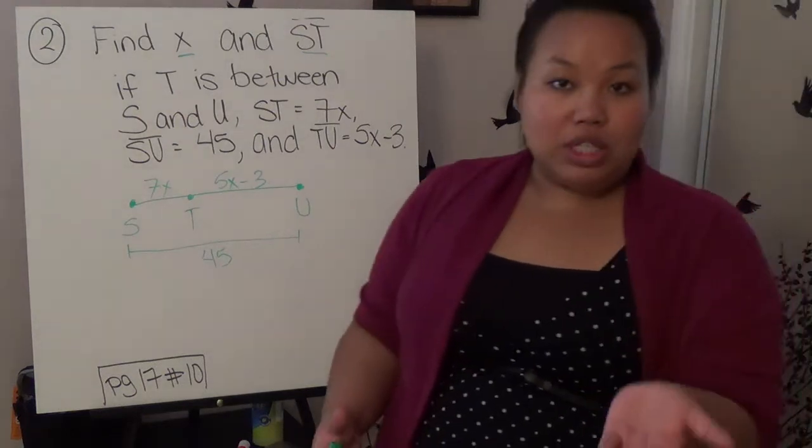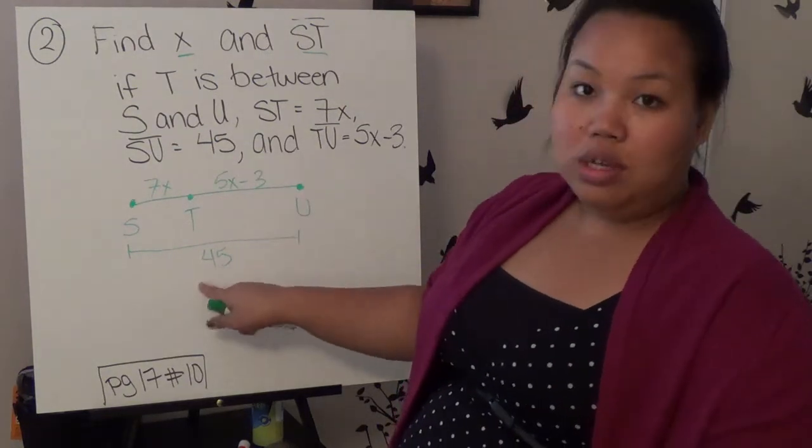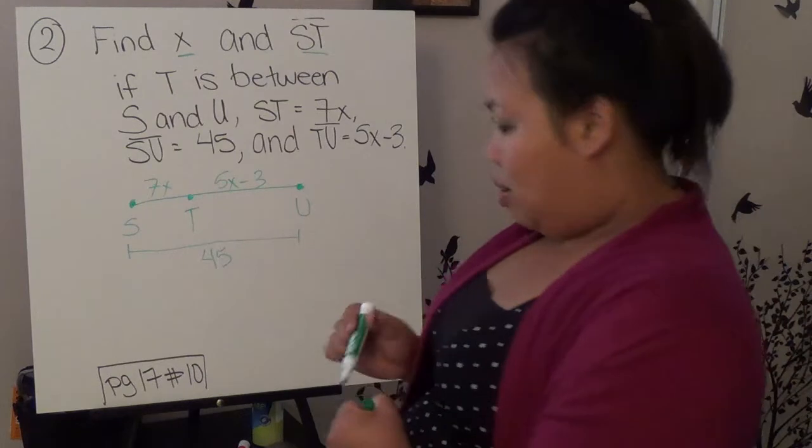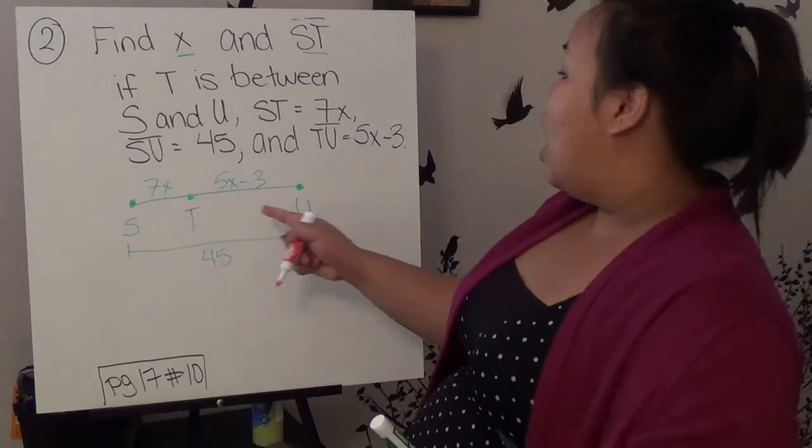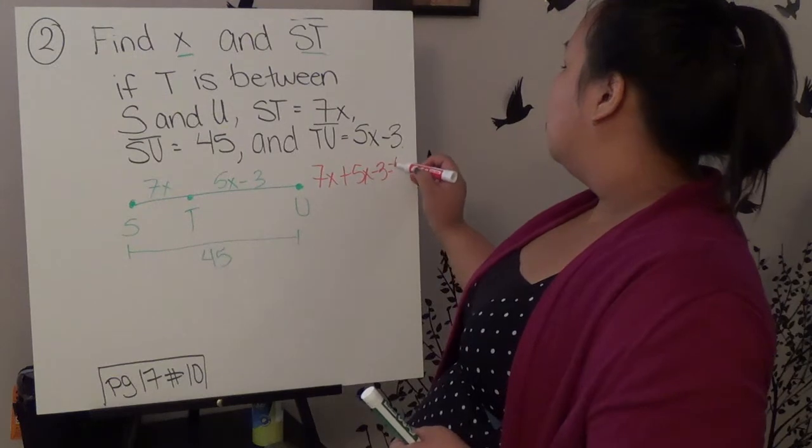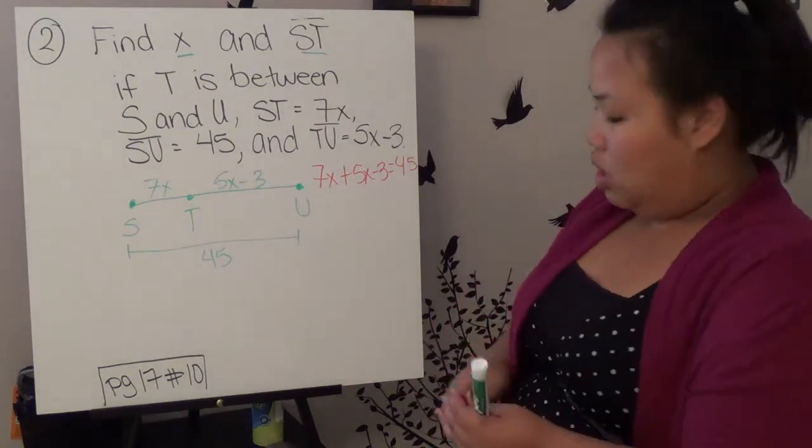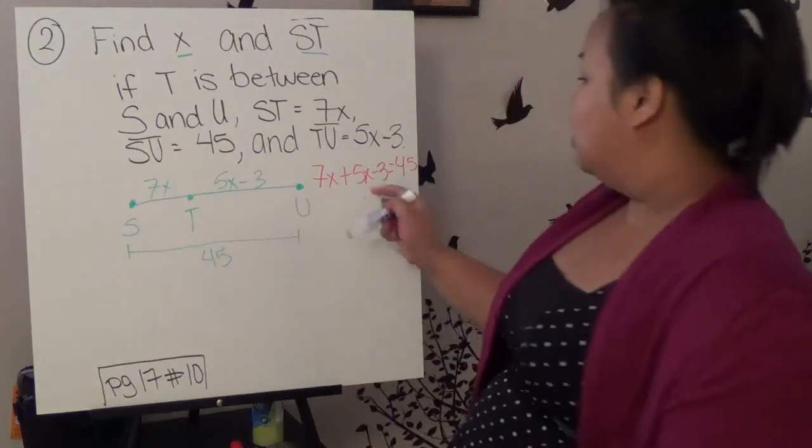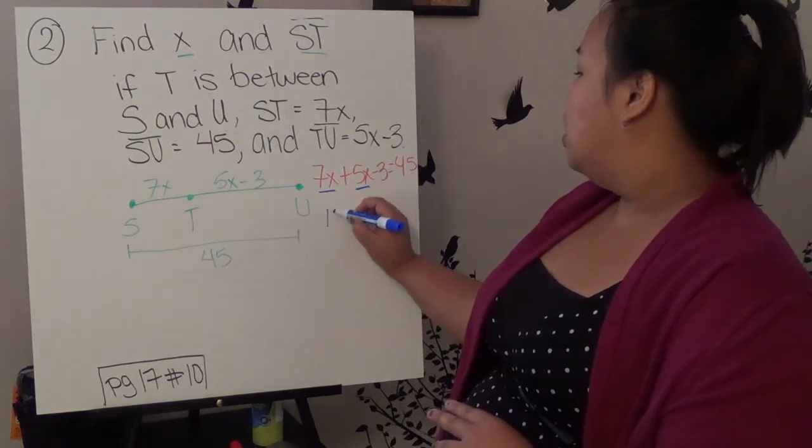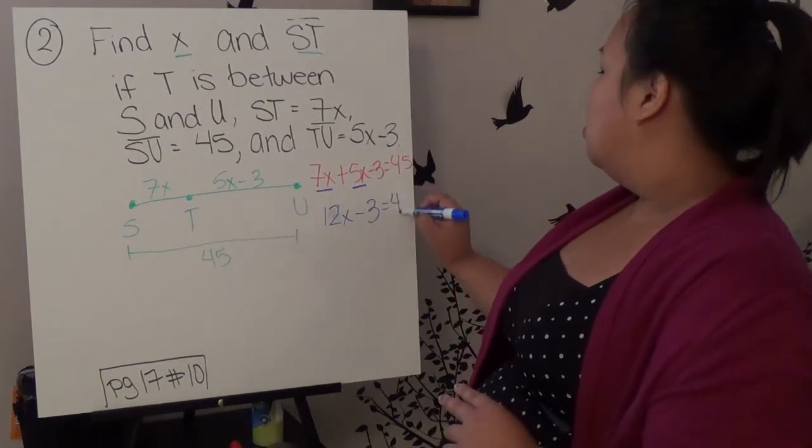So it's the same setup that we were dealing with prior. We know that this segment, with this segment, when we add them, gets me this. So ST plus TU equals all of 45. So it becomes, after you've set up the problem, then it becomes an algebra equation. So 7X plus 5X minus 3 equals 45. Our first step is to combine like terms. So if you remember that from last year, basically our terms are the X's. So 7X plus 5X gives us 12X minus 3 equals 45.